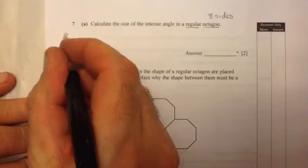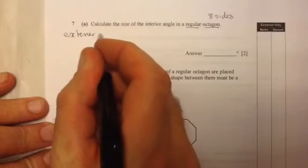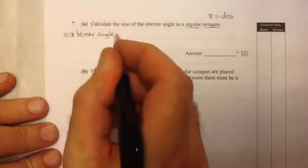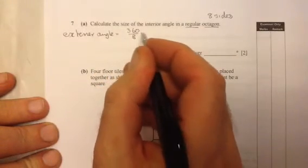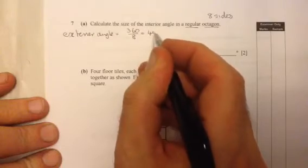So the exterior angle can be got by dividing 360 by the number of sides. So that comes out to 45 degrees.